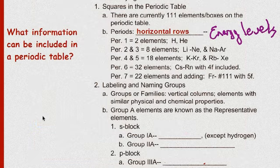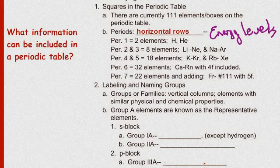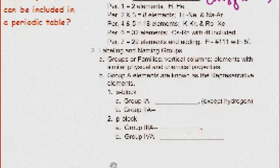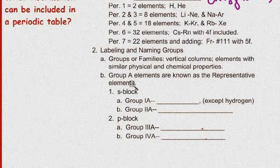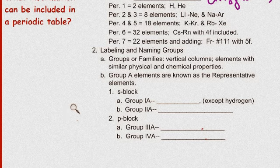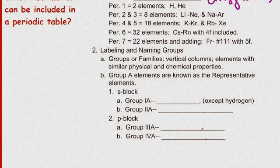Okay, so we get rid of that and then we get into the labeling and naming of the groups. Okay, so we have groups or families, which are the vertical columns on the periodic table. Okay, and they're elements with similar physical and chemical properties. Now, the group A elements are known as the representative elements.